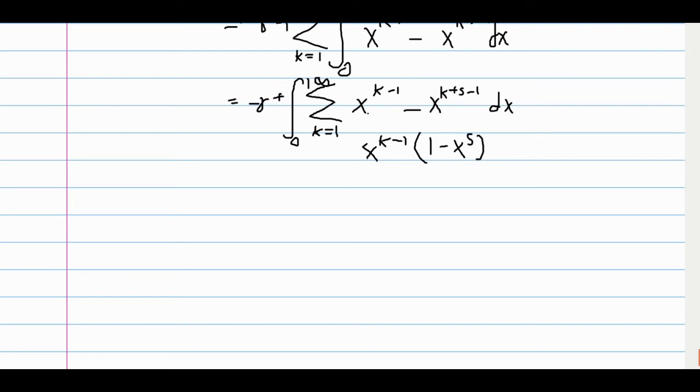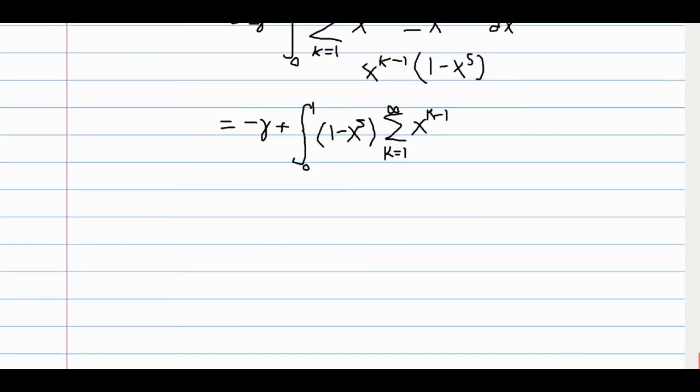And this is actually a constant with respect to k, our summation variable. So, we can pull out this 1 minus x to the s, and we get the integral, and then we have this factor outside of the sum, and then inside the sum, we just have x to the k minus 1, and this is just a simple geometric series.